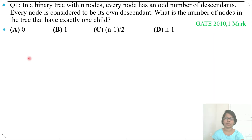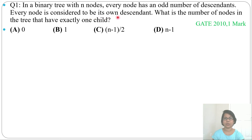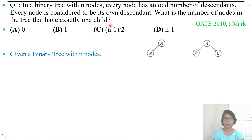Let's solve the first question on trees, asked in 2010. In a binary tree with N nodes, every node has an odd number of descendants. The twist here is that every node is considered to be its own descendant — so one node counts itself as its own descendant. The question asks: what is the number of nodes in the tree that have exactly one child?